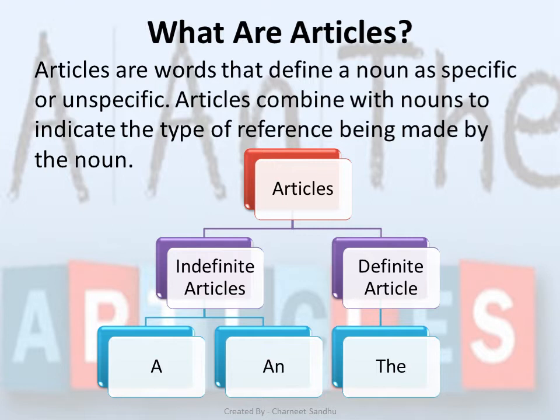As you can see here, articles are of two types: indefinite articles and definite articles. Indefinite articles are 'a' and 'an', and 'the' is the definite article.